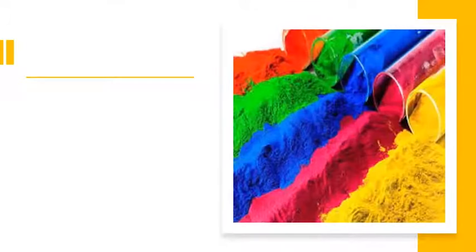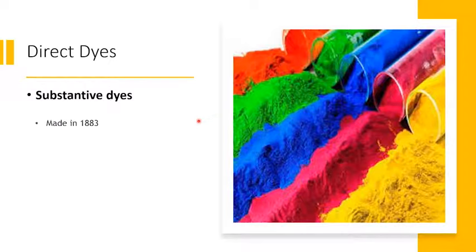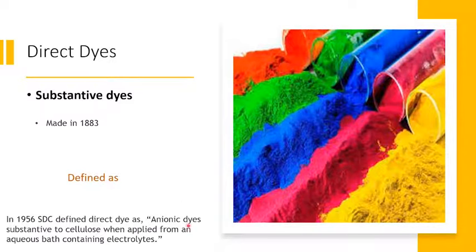Direct dyes are also called substantive dyes because they have affinity or substantivity towards cellulosic fabrics. These are two different things which we will discuss in detail in the classroom. These dyes were discovered in 1883 — the first synthesized direct dye was a yellow dye. According to SDCS, they are anionic dyes substantive to cellulose when applied from an aqueous bath containing electrolytes.